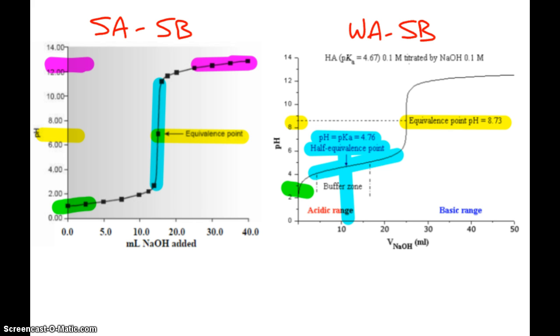And then again, you'll notice that the curve, this vertical portion is not as significant as it was in the strong acid strong base curve because the pH jump is not as tremendous. And then again, you'll notice that when we finish this titration, we are again at a pH that's indicative of a strong base. So those are some important key components of our titration curves for our two most popular.